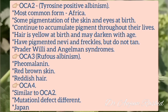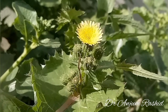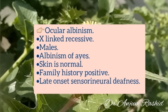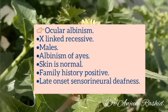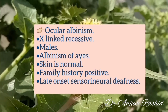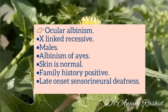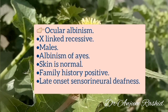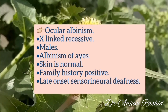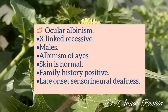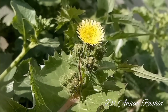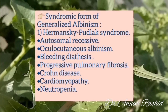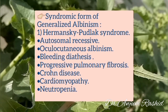Ocular albinism is X-linked recessive and is more common in males. In this condition there is albinism of the eyes while the skin is normal. Family history is positive and there is late-onset sensorineural deafness.